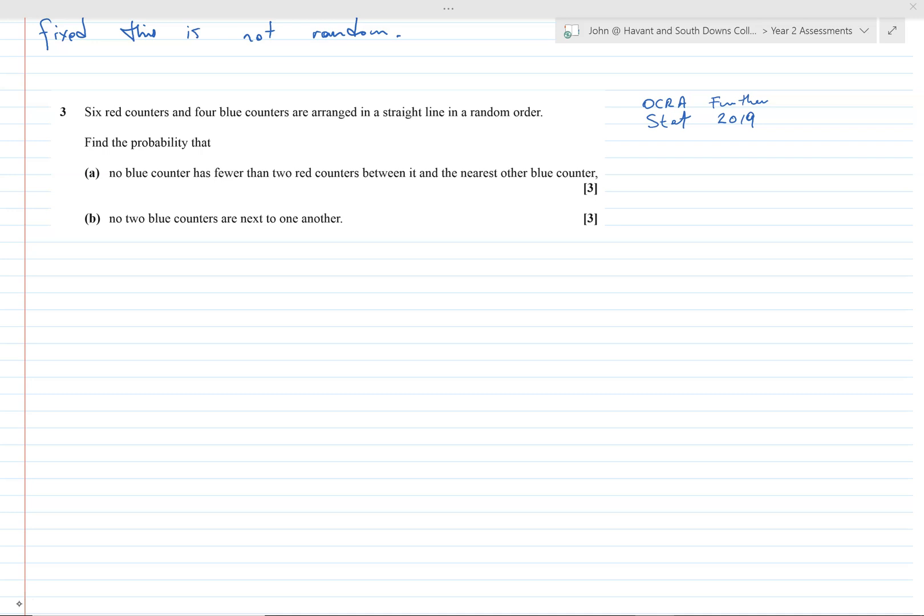So here we go. We've got 10 counters, six red and four blue, and they are being arranged in some kind of random order. Now, if you imagine that they all had a number associated with them from one to ten, then there would be 10 factorial ways that they could be arranged. There would be 10 factorial ways they could be arranged, so we need to find...